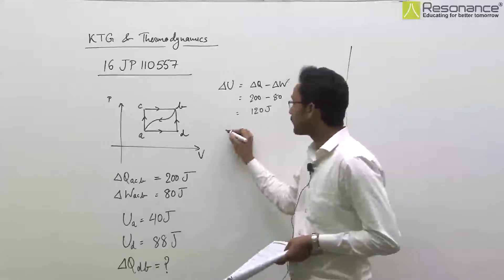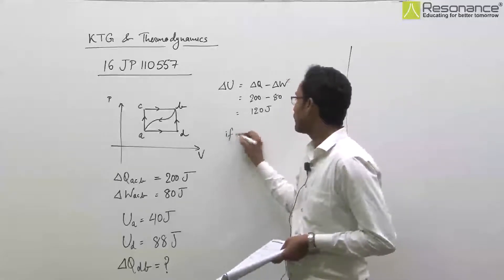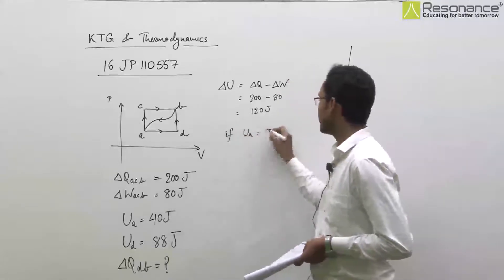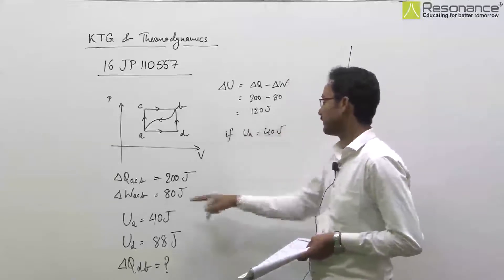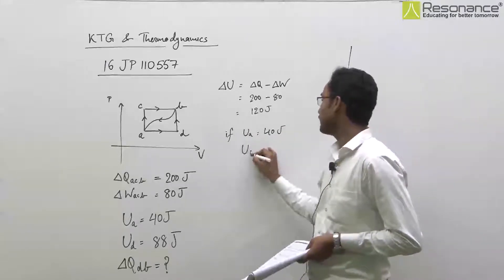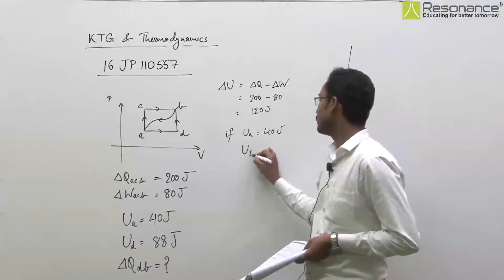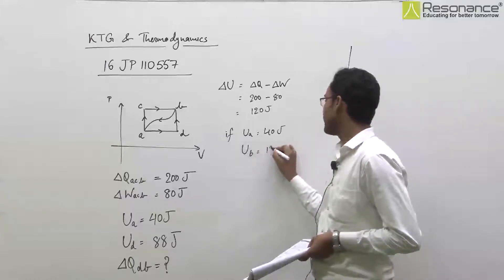Now, if UA is equal to 40 joule as given in the question, then UB will be equal to 160 joule.